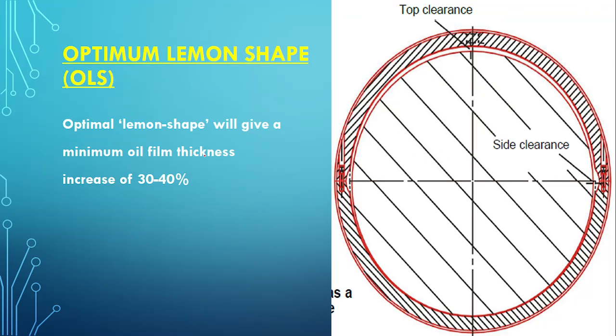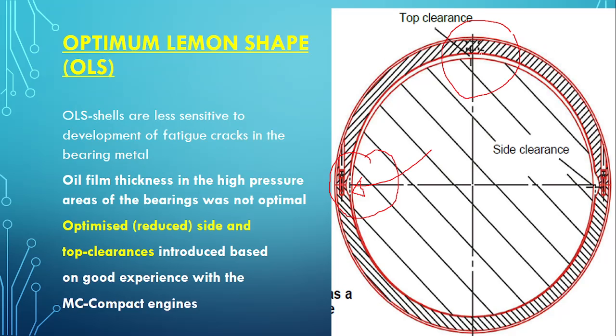This lemon shape helps increase the oil film thickness by 30-40%, which is increasing the chances of bearing to take more fatigue cycles.